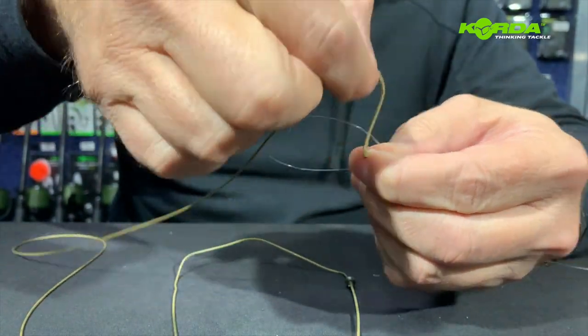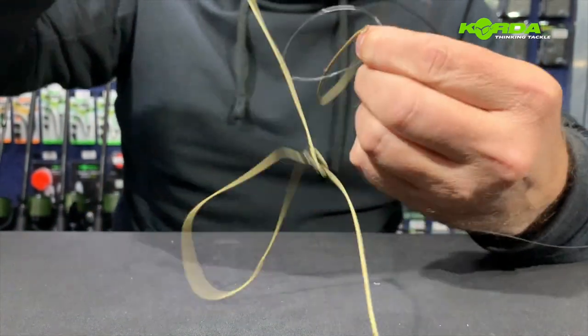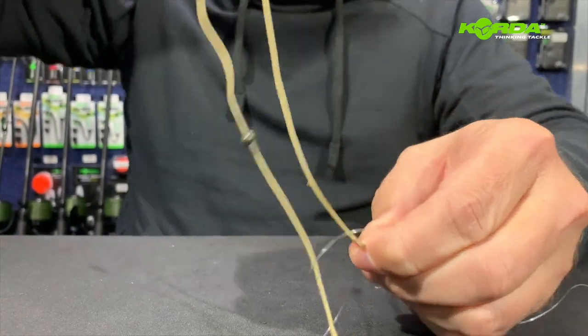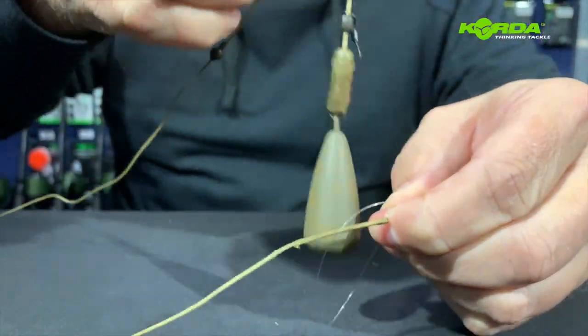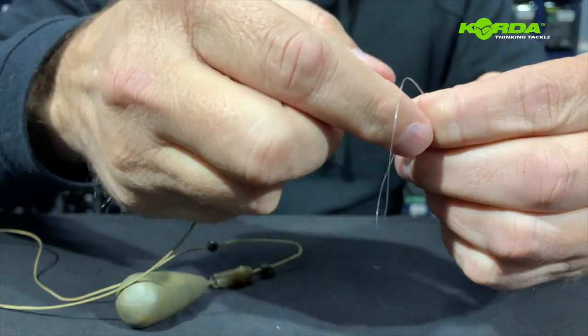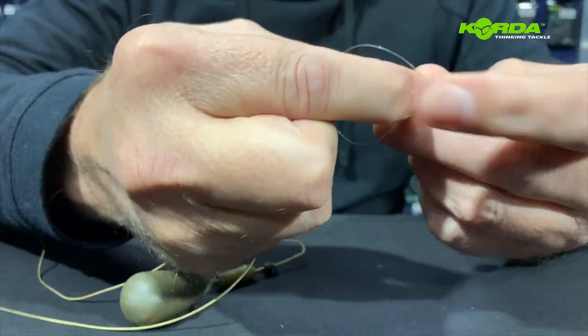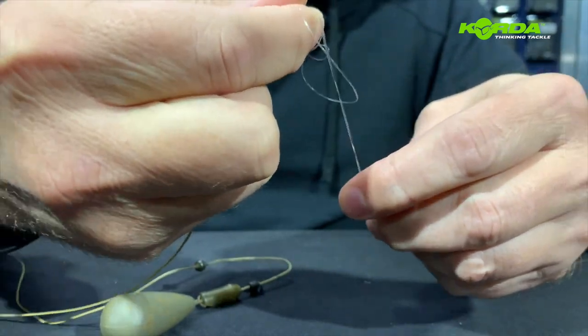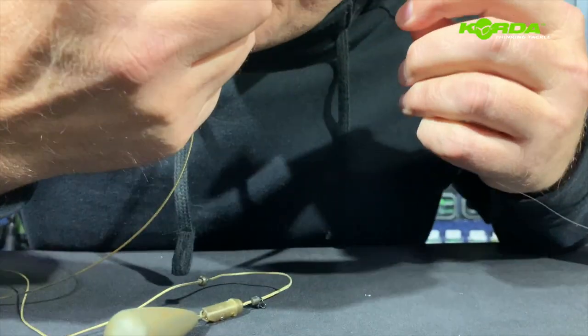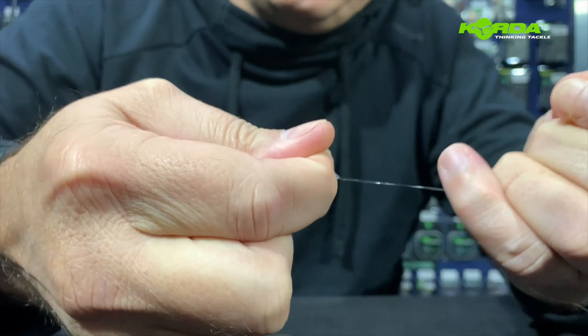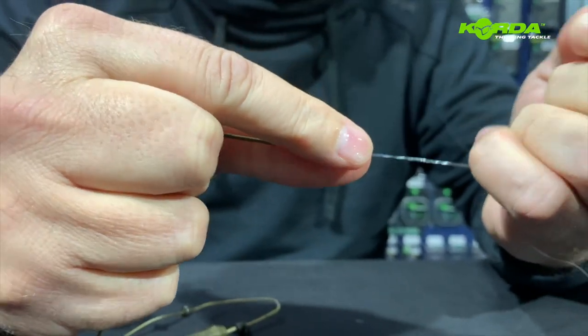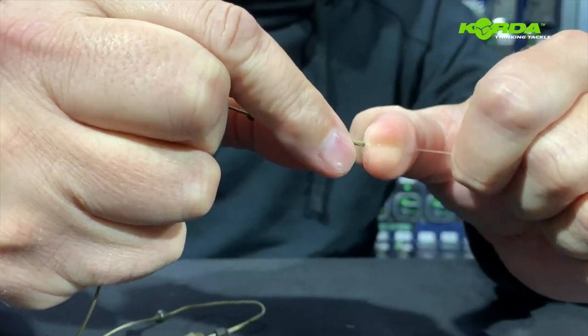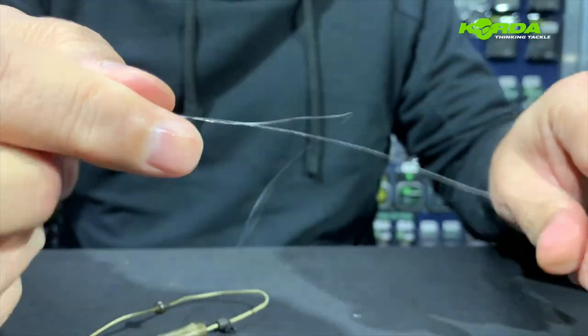Then I open up that loop and I pull all of the lead core through like that. And then I fold it over, everything on that side now, and I pull down on the knot, put a little bit of saliva on, and I just ease the knot down like that.